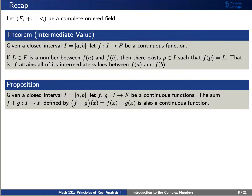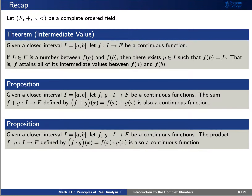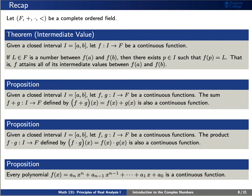If we have two continuous functions f and g on a closed interval i from a to b, then their sum is also a continuous function. Similarly, if we have two continuous functions f and g on a closed interval i, then their product f times g is also a continuous function. Finally, using these three propositions, we'll note that every polynomial f is a continuous function as well.